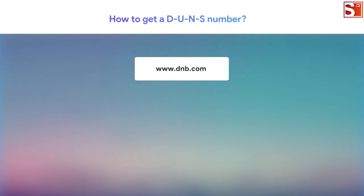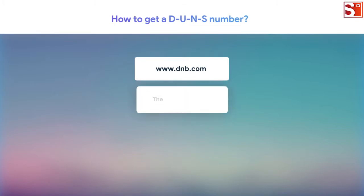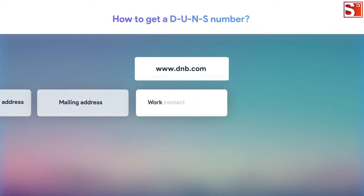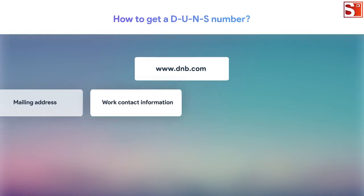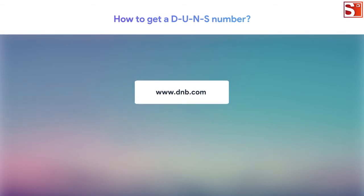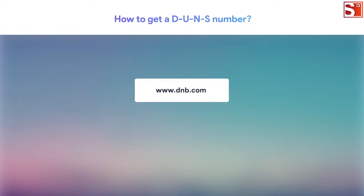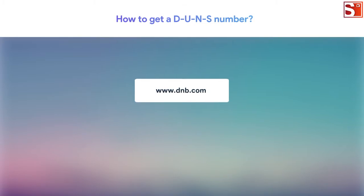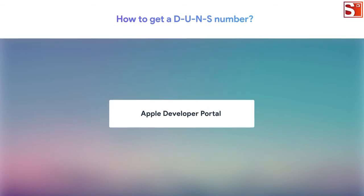To get a DUNS number, request one at the Dun & Bradstreet website. Every branch of the same company will need a separate DUNS number. When requesting, you need to provide the legal entity name, headquarters address, mailing address, and work contact information. D&B may contact your company directly and request more company info, so keep your company registration details close. It may take up to five to thirty business days to receive the DUNS number, and another two days for Apple to receive it.